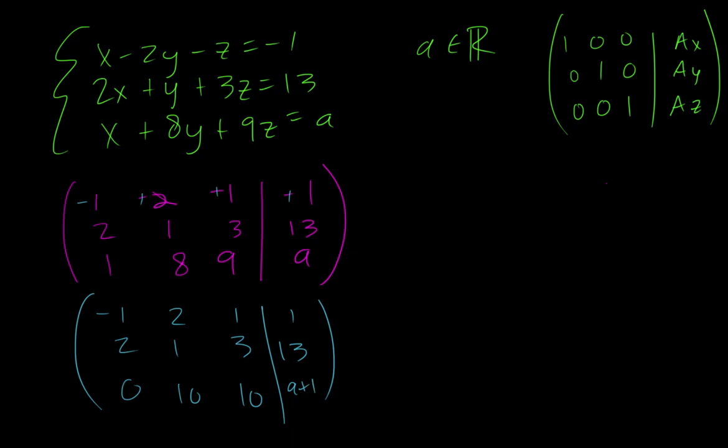Alright, from here, we want to try to make a zero above or below, and so I'm just going to do a multiple, so I get negative two, four, two, two, and the top row stays the same, the bottom row stays the same.